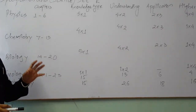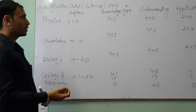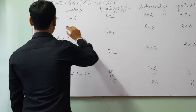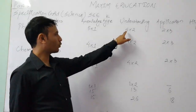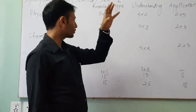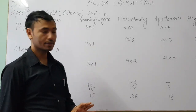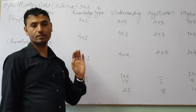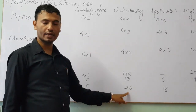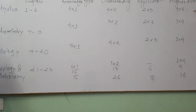The next set of questions is understanding-type questions. Here you need to explain the knowledge you have and show how much you have understood about the portion. In physics you will get 4 understanding questions of 2 marks each, similarly in chemistry 4, biology 4, and geology and astronomy 1. Altogether 13 understanding questions are asked, carrying 26 marks.